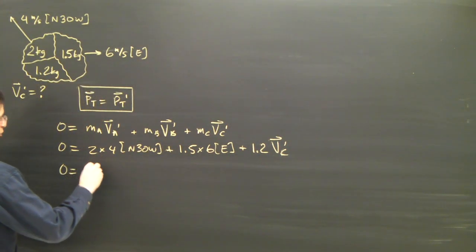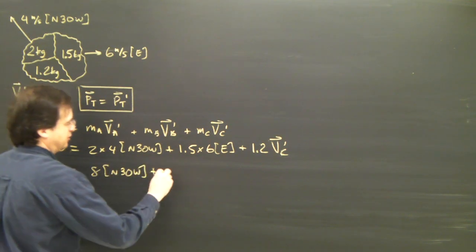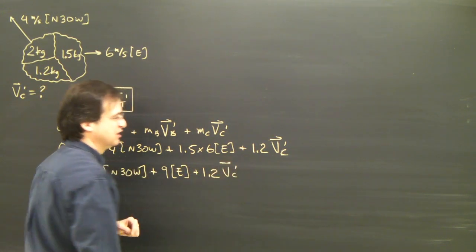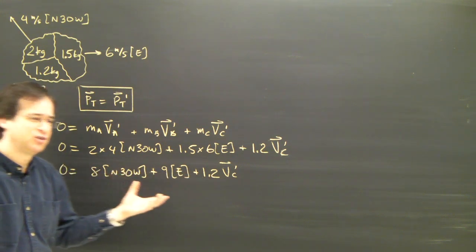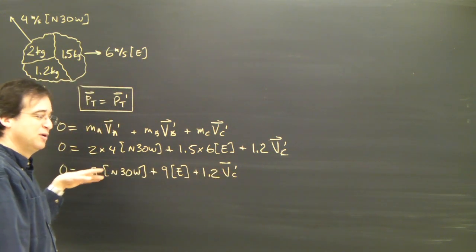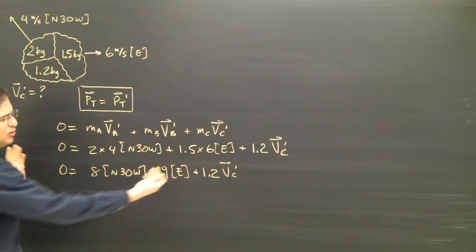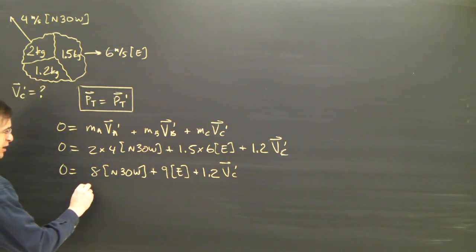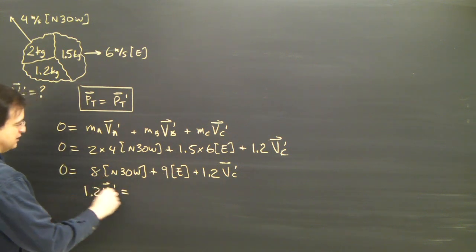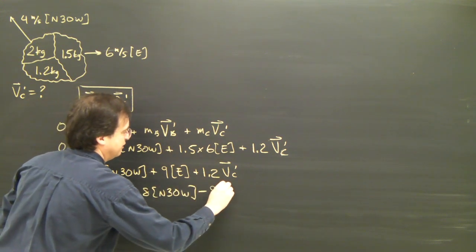So let's complete this: 4 times 2 is 8 north 30 west, plus 1.5 times 6 is 9 east, plus 1.2 v_c afterwards. I've got to rearrange this and solve for it. I'm going to leave the 1.2 times velocity on one side and bring the other vectors to the other side of the equation, so I end up with 1.2 v_c afterwards equals minus 8 north 30 west, minus 9 east.